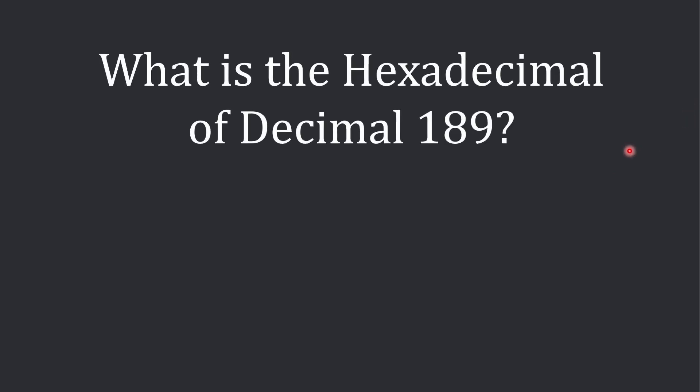Now wait for a moment and answer this question. What is the hexadecimal equivalent to this decimal number 189? Your options are A, AD and B, BD. Solve this as soon as possible and write the answer in comments and let's see how many of you got the right answer. So now let's move ahead.